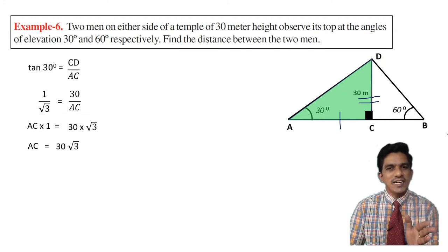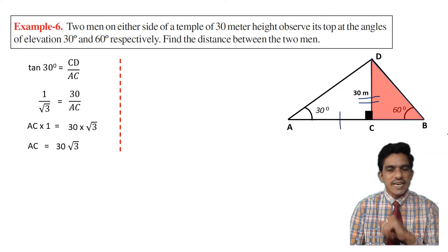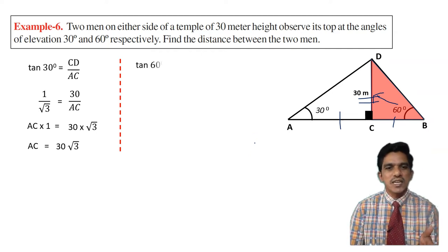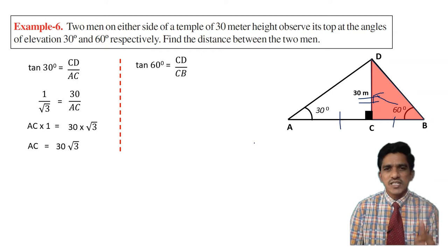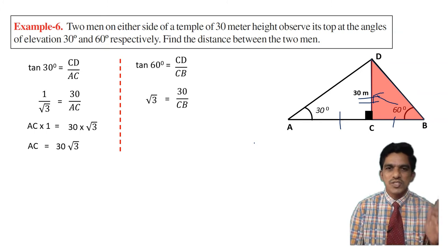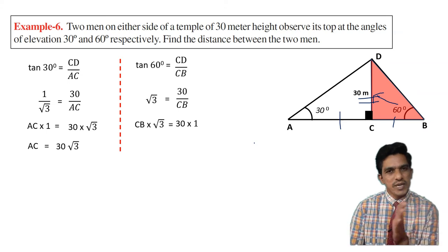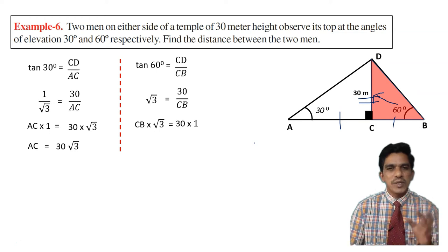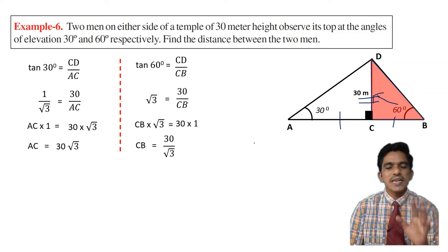Now by using the second triangle we will calculate CB. We have angle 60 degrees and CD is again the opposite side. I want to find CB. I will use tan 60. Tan 60 is opposite over adjacent, so root 3 equals 30 over CB. Cross-multiplying: CB times root 3 equals 30, so CB equals 30 over root 3.